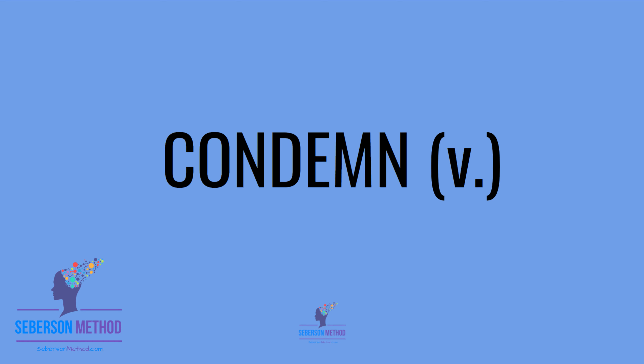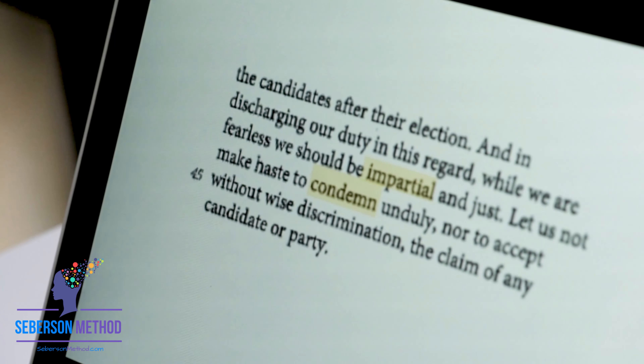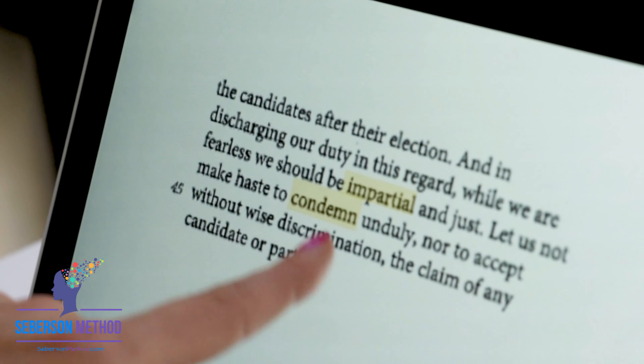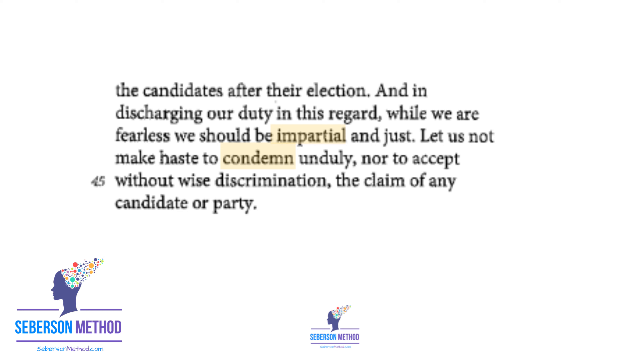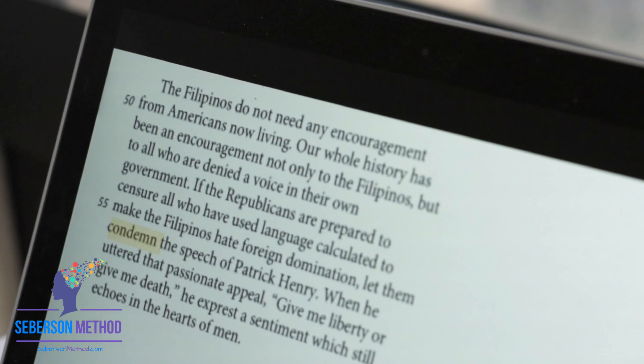Next verb is to condemn, a valuable word that shows up in both the passage and the answer choices. To condemn means to publicly denounce. Example: 'Let us not make haste to condemn unduly' — haste means rush, unduly means unnecessarily, so let's not rush to publicly accuse someone. Also: 'all wrongdoing should be condemned' — publicly criticized. 'Let them condemn the speech of Patrick Henry.'